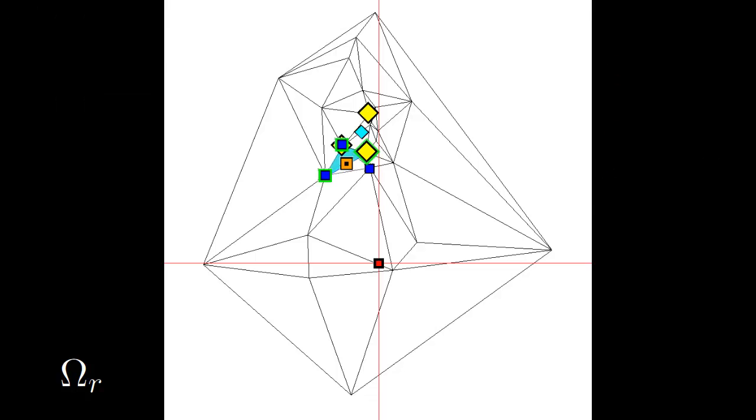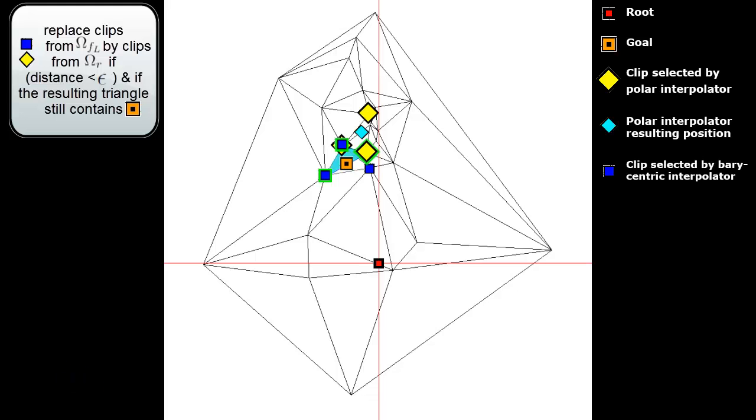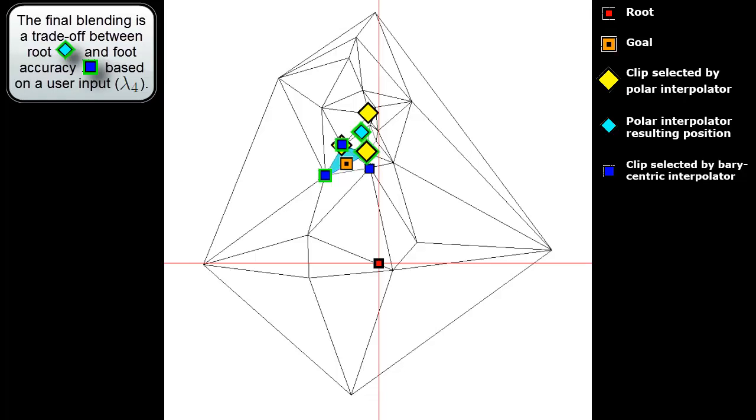For the three animations with highest weight selected based on root velocity, we check whether we can replace any vertex of the triangle and obtain a new triangle that still contains the goal position. The final blending is a trade-off between root velocity and foot accuracy based on a user input parameter, lambda 4.